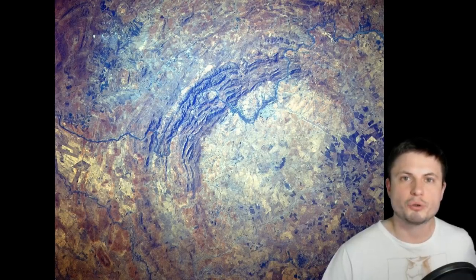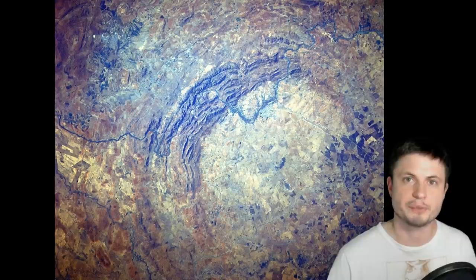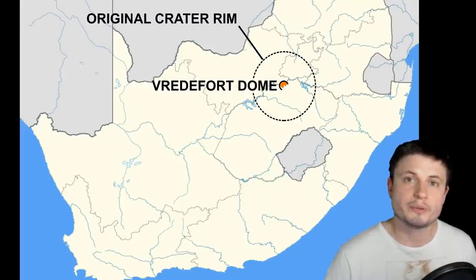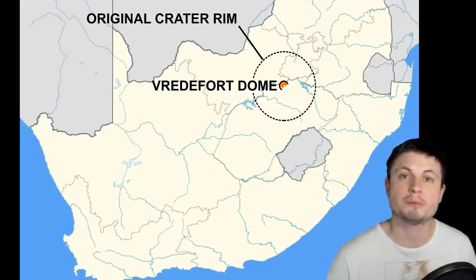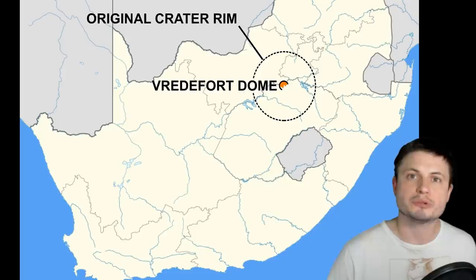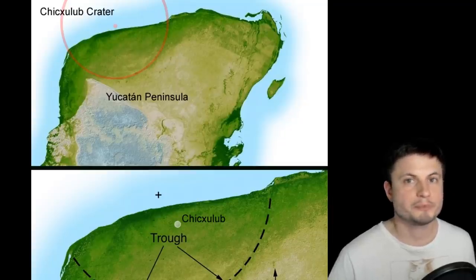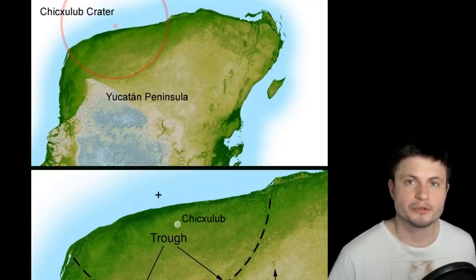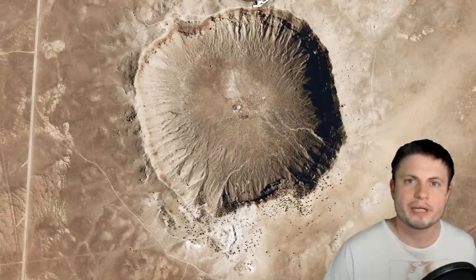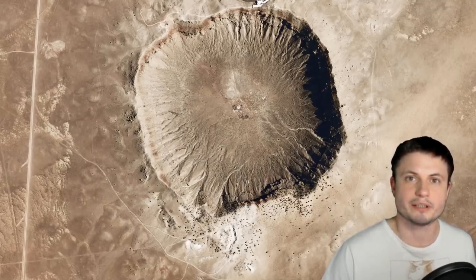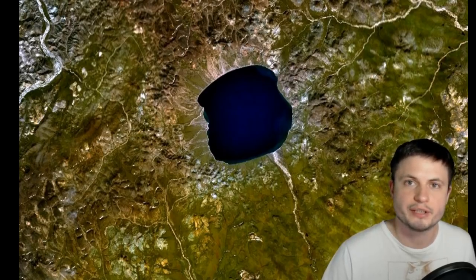The largest crater to date and the previous record holder for the oldest crater discovered is located in South Africa—the Vredefort crater. This is a picture taken from space. It was created around two billion years ago from a collision with a rock about 10 to maybe 15 kilometers in size. That's almost double the size of the rock from the Yucatan Peninsula that was responsible for the extinction of the dinosaurs. These rocks are all relatively similar in size—usually anywhere from one kilometer to maybe about 10.